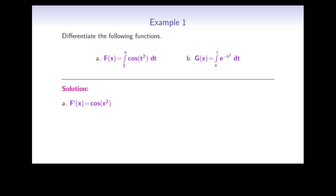In part b, we have another function, g of x, which is also defined as an integral. But this time, the lower bound is the variable and the upper bound, pi, is a constant. So before we use the first part of the fundamental theorem, we will need to switch the order of the bounds. This introduces a negative sign, and now g of x is written as negative integral from pi to x of e^(−t²) dt. Applying the first part of the theorem, we get g prime of x is equal to negative e^(−x²).